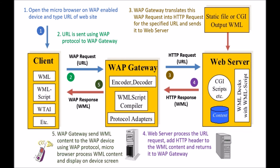Step five: the WAP gateway sends the WML content to the WAP device using WAP protocol. The micro browser processes the WML content and displays it on the device screen. The WAP gateway gives a WAP response containing WML content to the client — the mobile phone. The micro browser on your mobile phone opens that WML content and displays it on the screen, so the URL you typed now appears on your mobile phone screen.